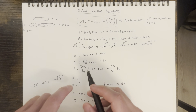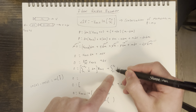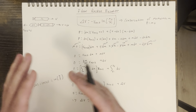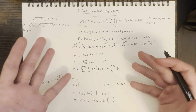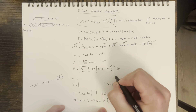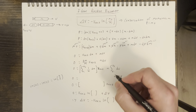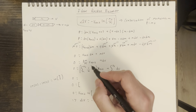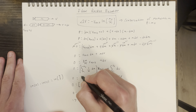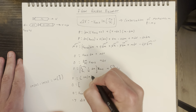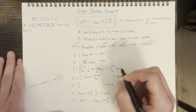We can then divide each term by mass to get it into this form. Now let's integrate. We're going to integrate from our initial mass to our final mass, and from our initial velocity to our final velocity. The right-hand side is simply going to give us our delta v, which is v final minus v initial.